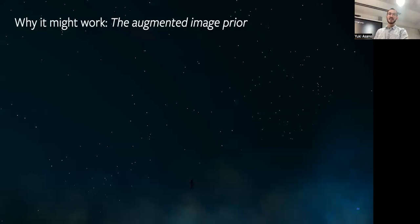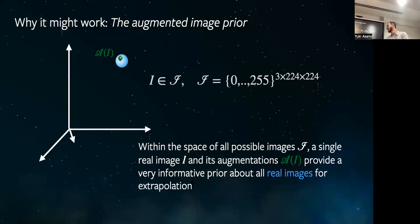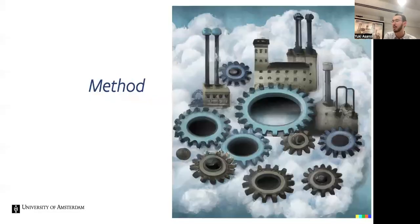Before I tell you that it works, I'm going to tell you why it might work first of all. If you consider the space of all possible images, or even just a slightly smaller space, all possible images with RGB values that are between 0 and 255 of size 224 by 224 for three channels, that's times three, this is a huge space and most of the instantiations in this space are garbage pictures, they don't mean anything. So if our earlier hypothesis is true, the space of all natural images is sort of this lower dimensional manifold up there, and then a single image would be and its augmentations would be there. So what we call the augmented image prior hypothesis is the following: that within the space of all possible images, a single real image and its augmentations provide a very informative prior about all real images for extrapolation. So this is sort of the visual motivation.